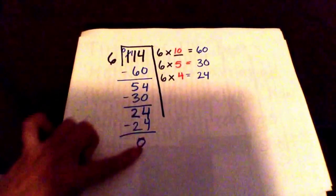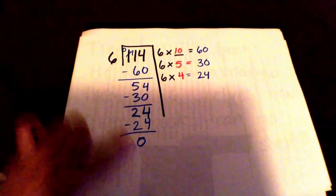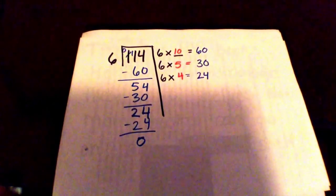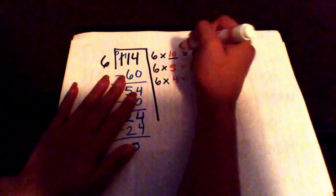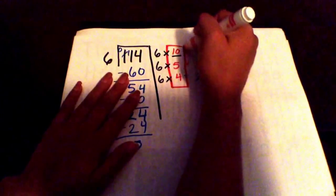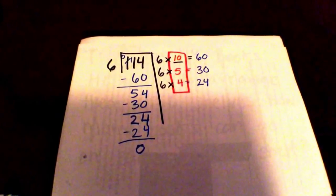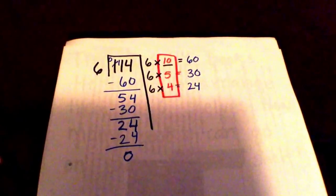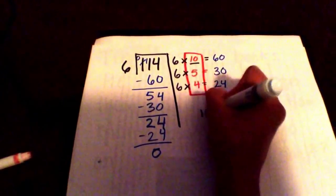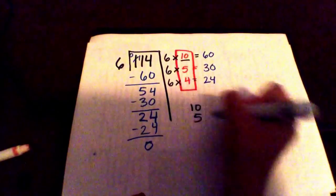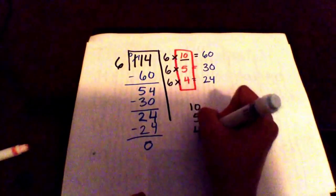Now I'm done because I got to zero. My next step is to add my partial quotients. I have 10, 5, and 4.